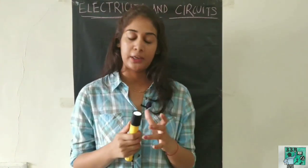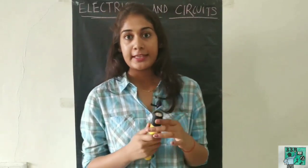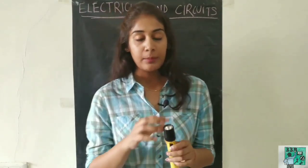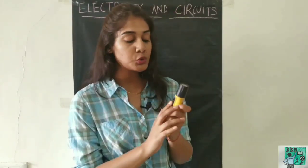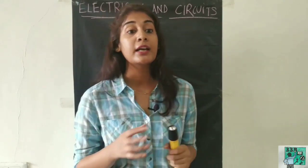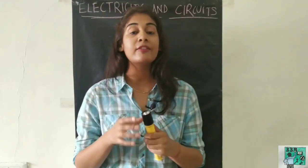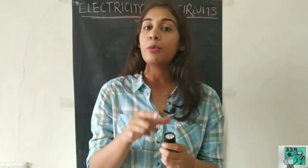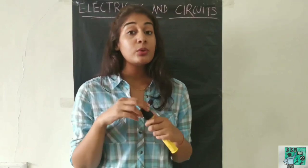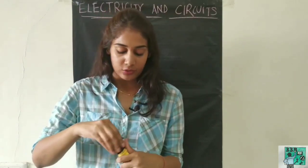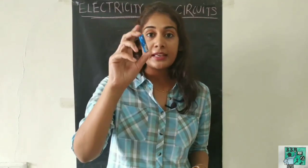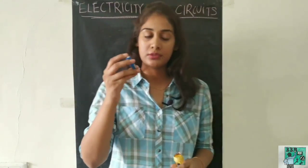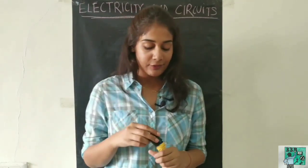When will this bulb glow? It happens that when you switch it on, still this bulb doesn't glow. In that case, there is a battery. The battery plays a very important role in the glowing of the bulb. This is basically a dry cell — we call it a dry cell. The dry cell produces electricity. We will also learn the functioning of this dry cell.